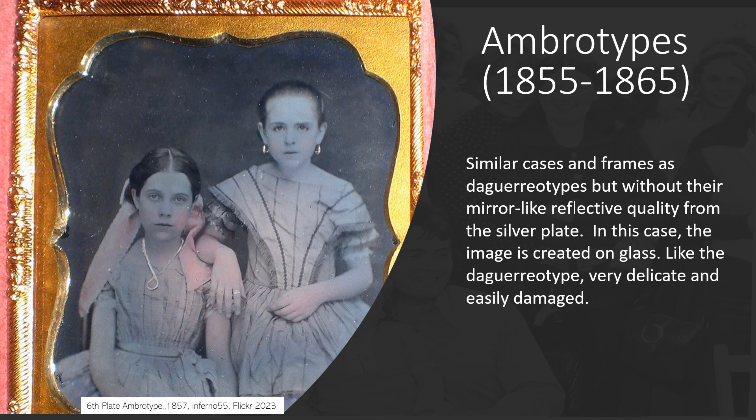There is a distinctive appearance that sets ambrotypes apart from both daguerreotypes and tintypes. The exposure time for this type of photograph was really long — typically several seconds — so the sitter had to remain very still during the process. This is why you see many people in ambrotypes and daguerreotypes looking very serious, with not many smiling faces.